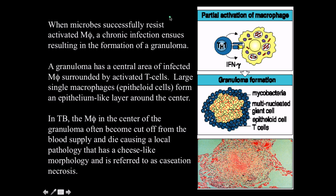Macrophages are really good at their jobs, but in every immune mechanism we've discussed, microbes have developed counter-mechanisms. Some can actually resist being phagocytized by activated macrophages. A chronic infection will result in the formation of a granuloma — a central area of infected macrophages surrounded by activated T cells. These T cells are really large and form an epithelium-like layer around the center.